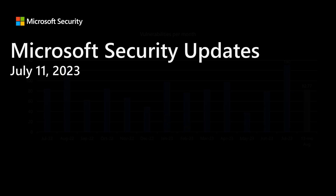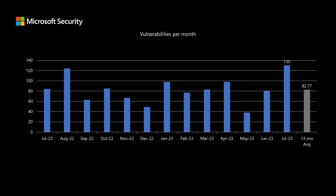Before I dig into today's release, I like to compare it to the past 13 months of releases, so we can get an idea of how this one stacks up to previous releases. It's quite a large month when it comes to the number of vulnerabilities. We've been averaging almost 83 vulnerabilities per release. This month, we have 130 new CVEs in today's releases.